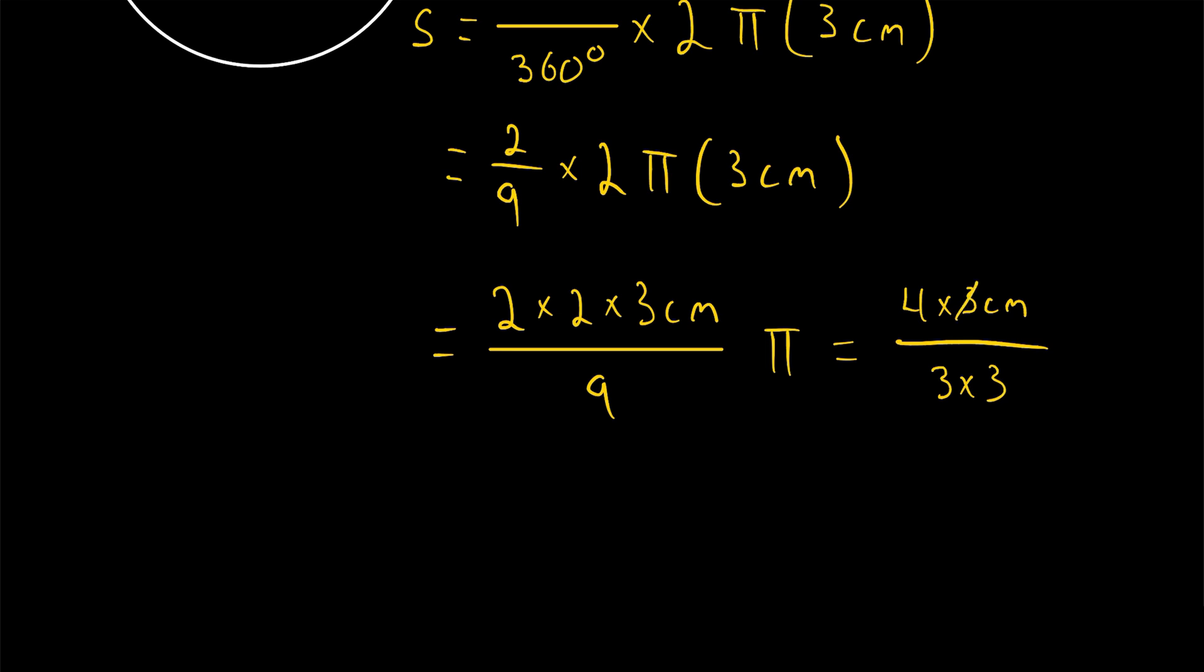That will leave us with 4 centimeters in the numerator and just 3 in the denominator, so we've got 4 centimeters over 3 multiplied by pi. And then, lastly, we typically like to have units at the end of our expression, so we could rewrite this as 4 thirds pi centimeters.